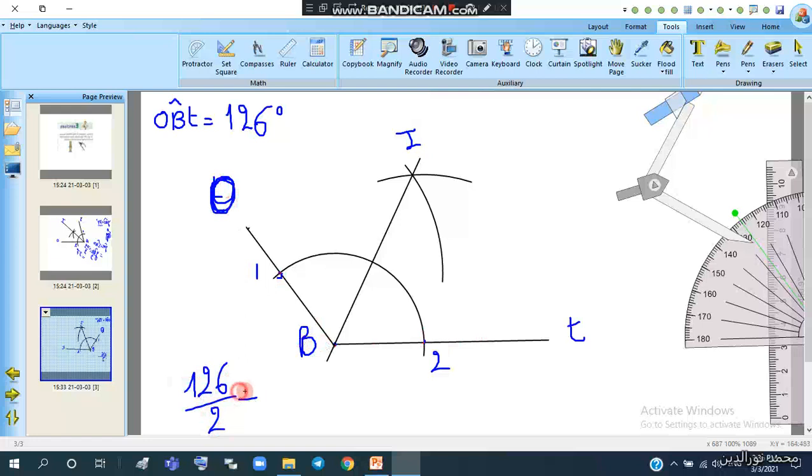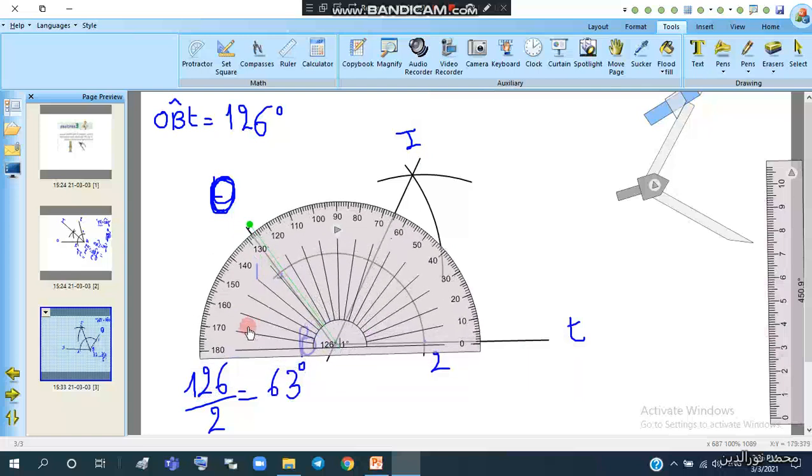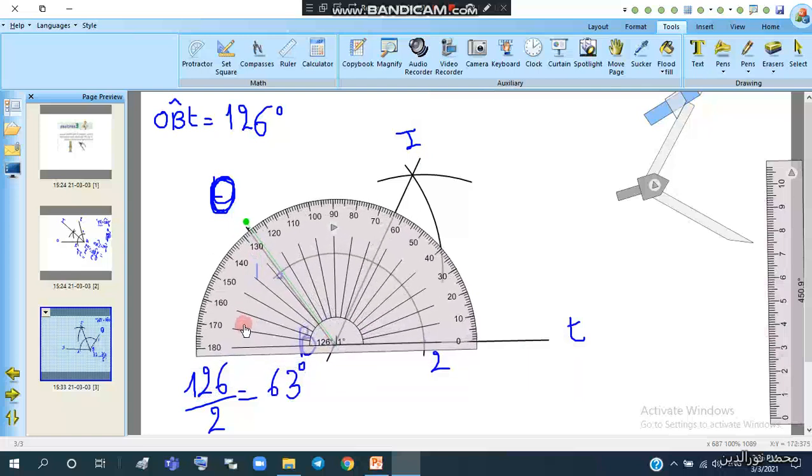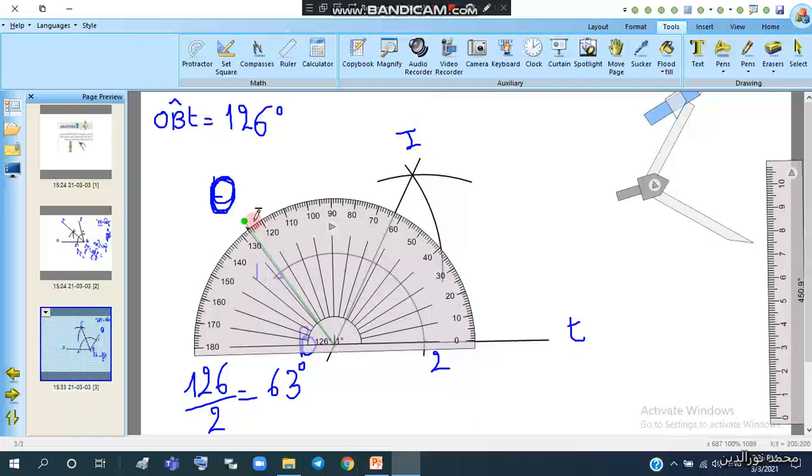So that's 63 degrees. Each angle should equal 63. Let me measure one of them with the protractor. I notice this angle measures 63.